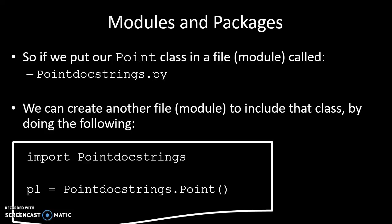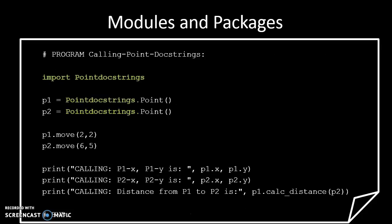And then if there is a class in Pointdocstrings called Point, then I can declare an instance P1 by just saying Pointdocstrings.Point(). And this is what it would look like in code.